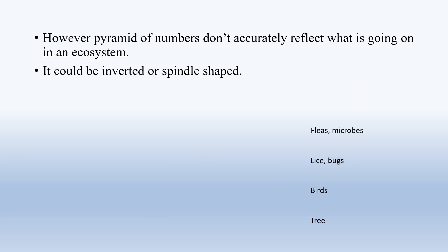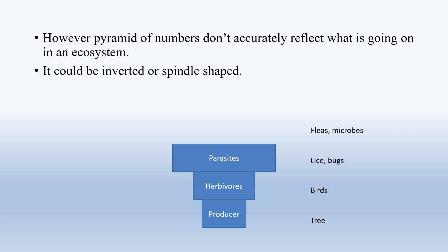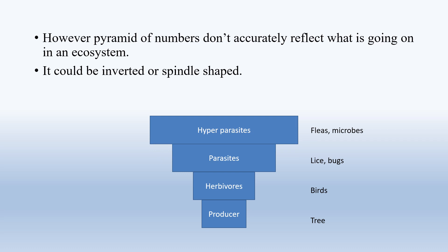In reality, the pyramid of numbers doesn't accurately depict what is going on in an ecosystem, and there could be instances where this relationship is skewed or even inverted. For example, in a tree ecosystem, a single tree is taken as the producer, and the primary consumers — birds — are more in number than the producer. Parasites on the birds are more numerous than the birds, and hyper-parasites feeding on the parasites are even more numerous, so the pyramid of numbers is inverted.